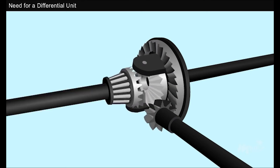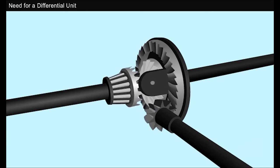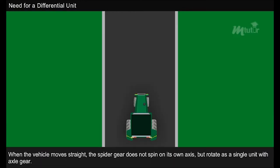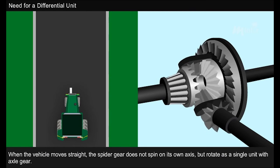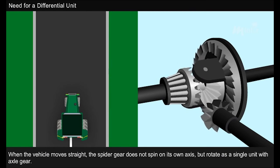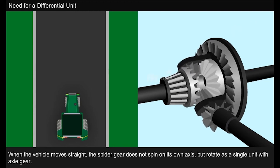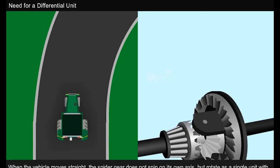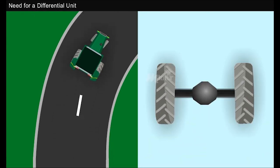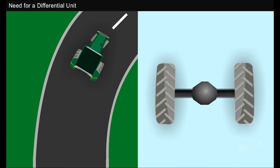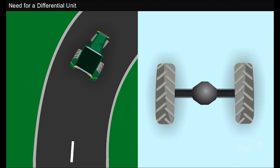When the vehicle moves straight, the spider gear does not spin on its own axis but rotates as a single unit with the axle gear, thus distributing equal power to both the wheels. But as the vehicle turns, the inner wheel restricts the axle rotation, resulting in the change of the speed of axle gears.